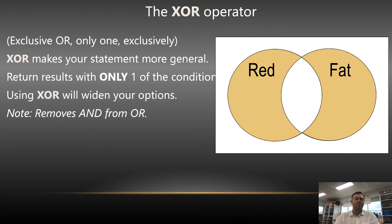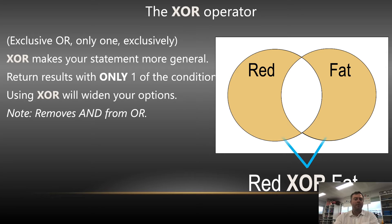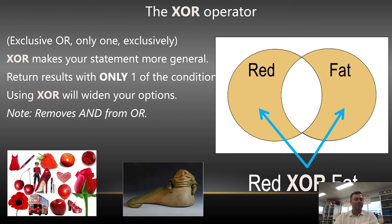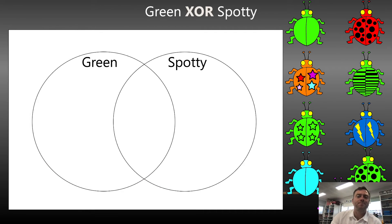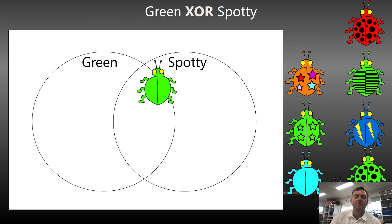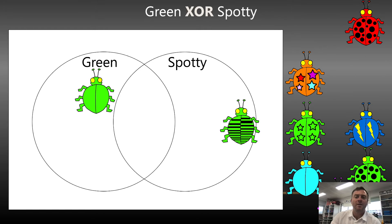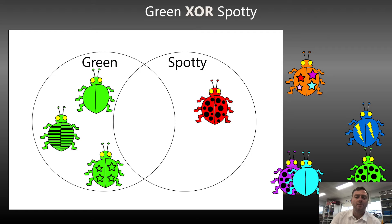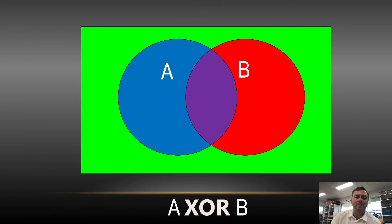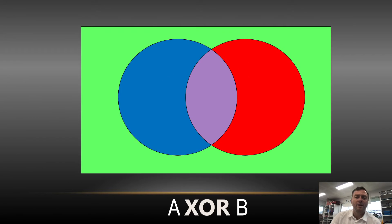So everything that's red XOR big would be Jabba the Hutt and the red things. If we went green XOR spotty, we would have all the things that were just green but not spotty, and then everything that was spotty but not green. So A XOR B would give you the red and the blue area.